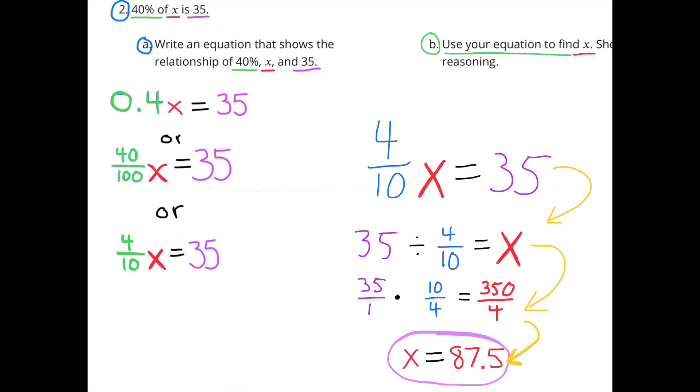Part B: Use your equation to find X. Show your reasoning. 4 tenths X equals 35, which is the same as 4 tenths times X equals 35. To solve for X, we can do 35 divided by 4 tenths equals X. To do that division problem, we multiply by the reciprocal of 4 tenths: 35 times 10 fourths, which equals 35 fourths. And 35 fourths means 350 divided by 4, and that is 87 and 5 tenths. So X equals 87.5.